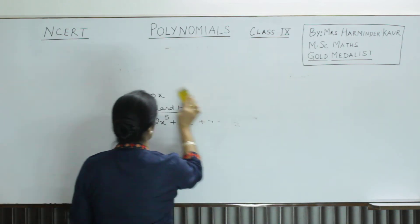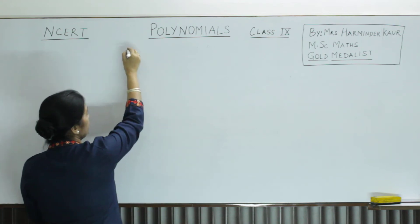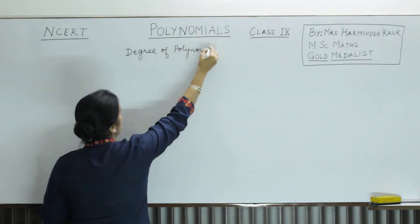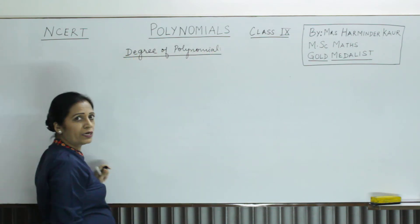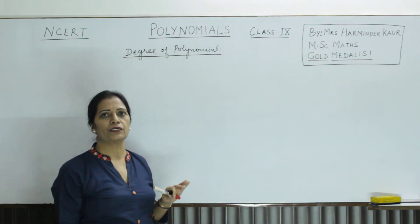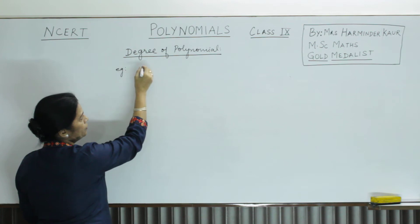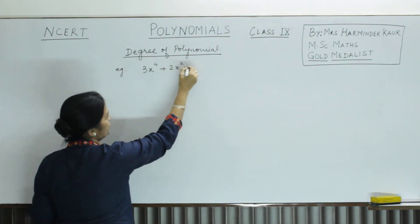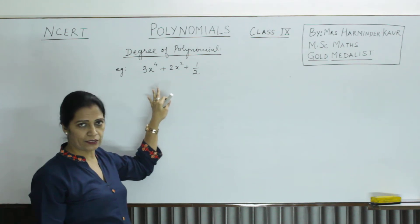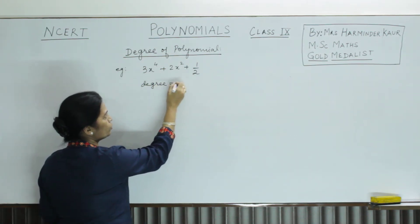Now we will see different cases. We study the degree of polynomial. What is the degree of polynomial? The degree of polynomial is the highest power of the variable in the expression. For example, consider 3x to the power 4 plus 2x squared plus half. The variable is x, and the highest power is 4. So we say degree is equal to 4.